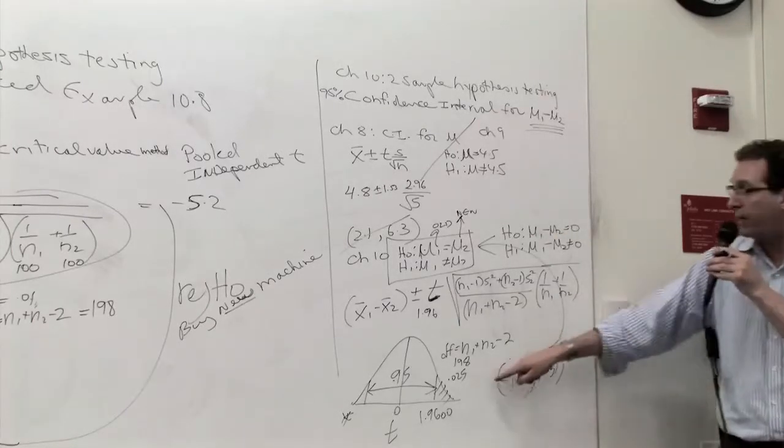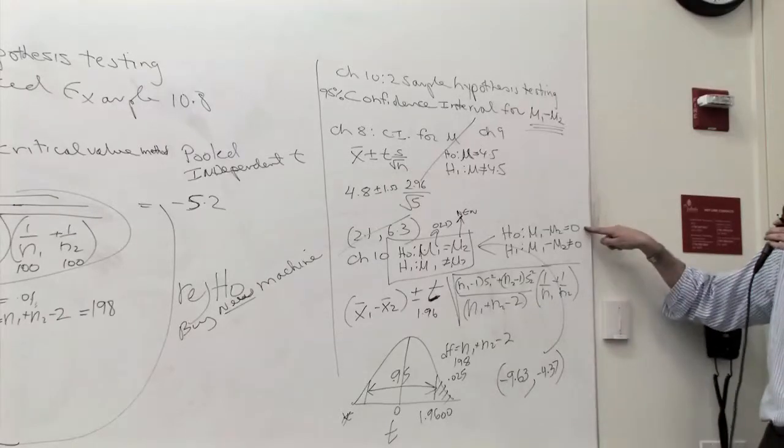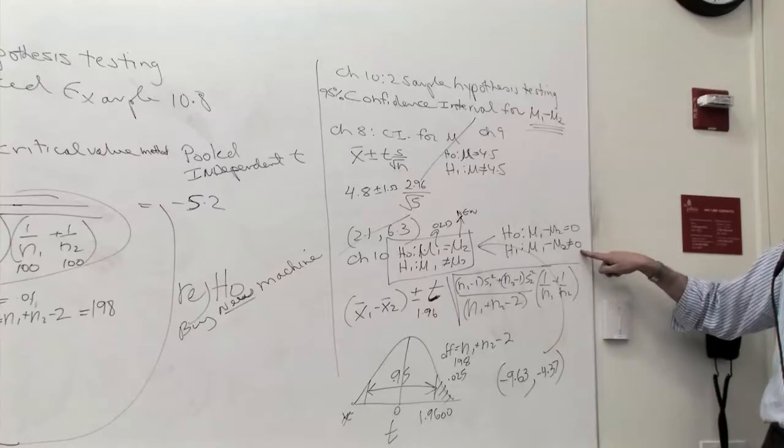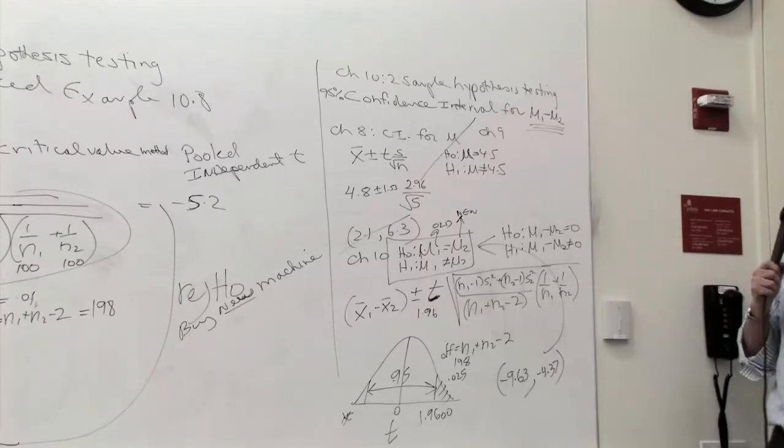On the other hand, if both are negative or both are positive, that's inconsistent with this, and that's a way of proving that. That wasn't really the main purpose of this over here, but you can relate the hypothesis testing to the confidence interval that way.